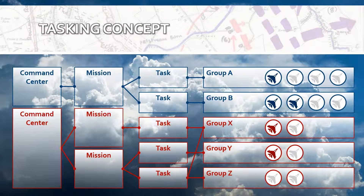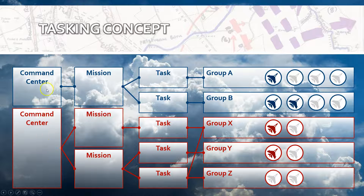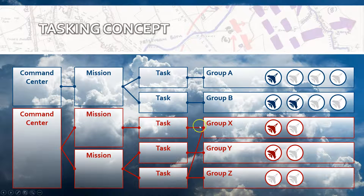This is an overview of the tasking concept. Basically you have command centers working for a coalition — a command center coordinates missions. A mission is a logical goal that needs to be accomplished by different groups acting within that mission, and these groups need to accomplish a task. So you can have the red coalition and the blue coalition executing different missions coordinated by a command center, and these missions need to be met by accomplishing tasks that are executed by different groups within the coalition.